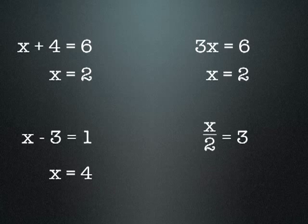x over 2 equals 3 means x divided by 2 equals 3. So that means x is a number that when it's divided by 2 equals 3. So x must be 6.